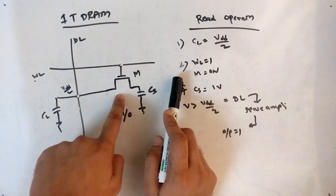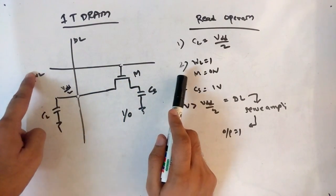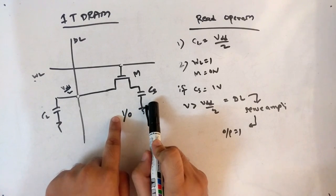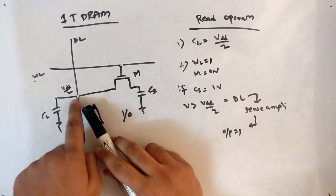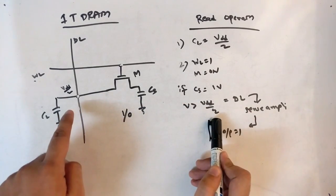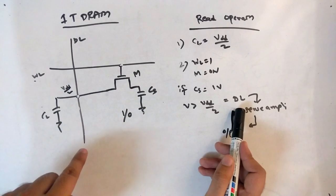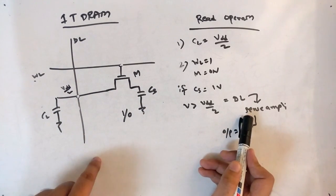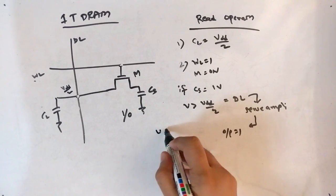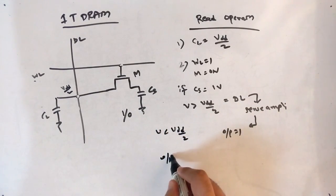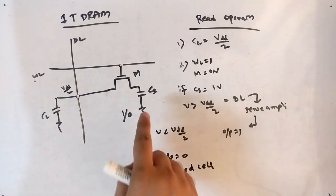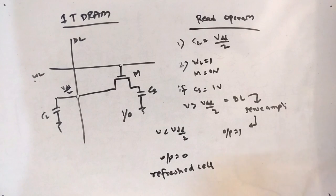Quick recap of the read operation: first, pre-charge CL to VDD/2. Second, set word line to 1 so M is ON — all depends on CS now. If CS holds a 1, it shares voltage and the data line goes above VDD/2; the sense amplifier outputs 1. If the data line voltage is less than VDD/2, the sense amplifier outputs 0. After reading, the cell must be refreshed.